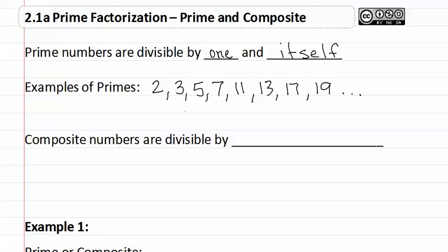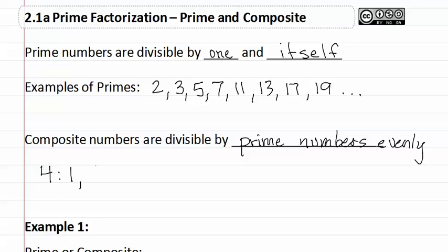Composite numbers are divisible by prime numbers evenly, meaning there is no remainder when you divide them. Some examples of composite numbers could be the number four. Four is divisible by one, two, and four. As you can see, it is divisible by a prime number and a composite number.